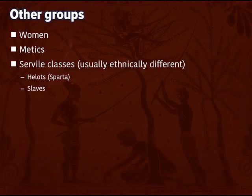Then there are the servile classes. In Sparta this is the helots, the serfs. In the rest of the Greek world, especially Athens, you find slave populations. Most of the slaves in Athens are domestic slaves there to demonstrate the importance of a house and a family, and so generally have things relatively good. But slave populations also include people working the mines, who have a very difficult life and very high mortality.